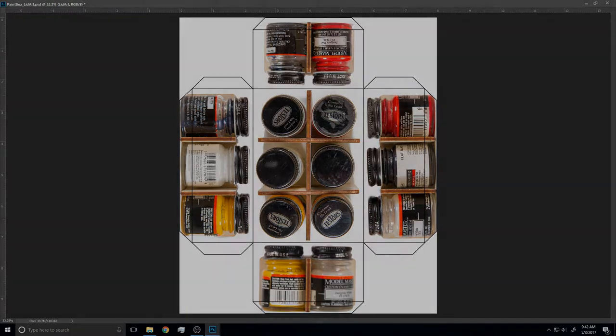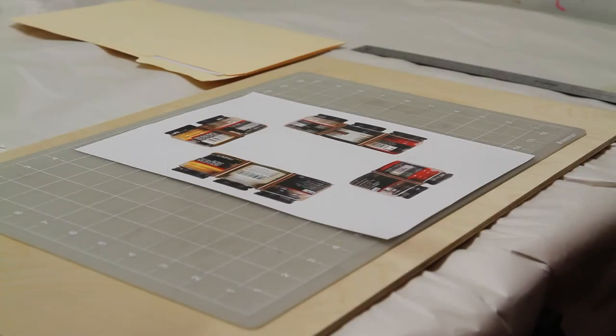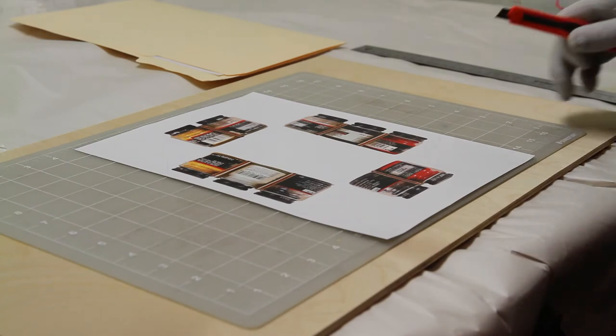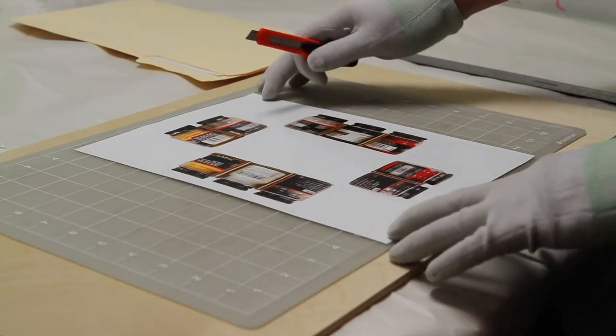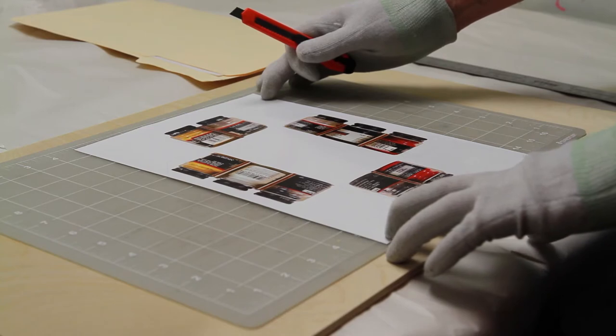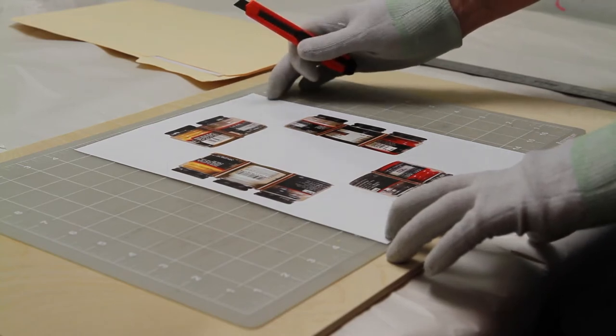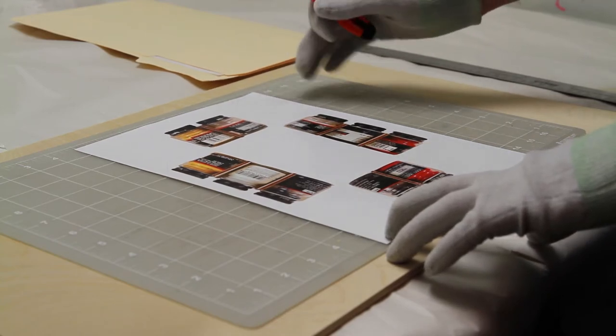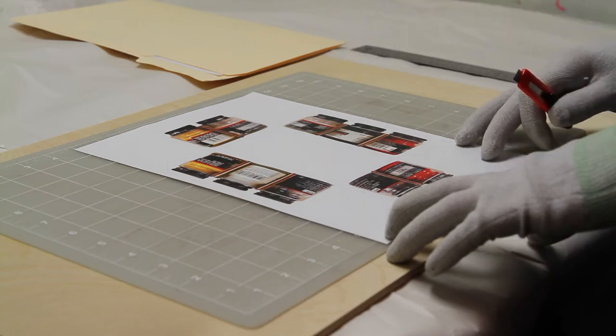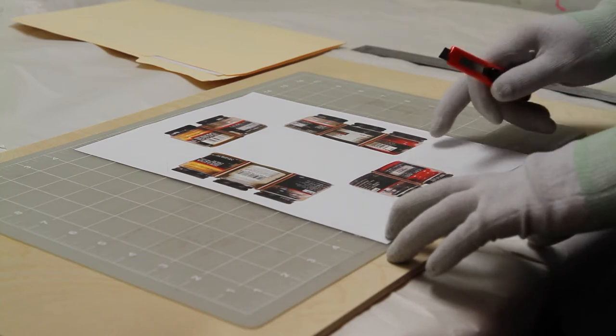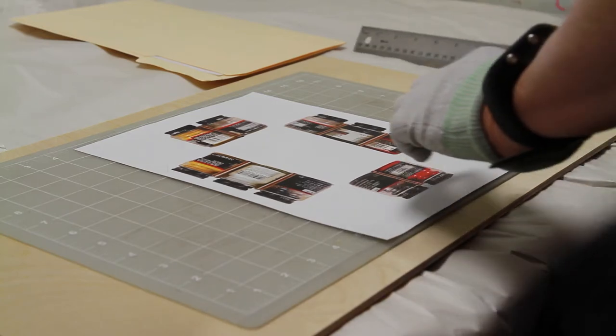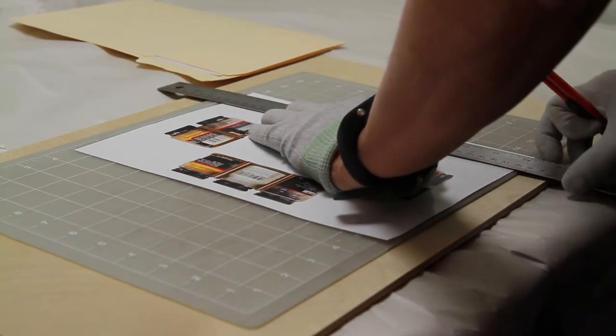In this tutorial we are applying our artwork to the paint box project. After you've laid out your artwork on the template and printed it out, it's time to cut away the excess. You can use the marks on the template itself to help you do that. That way you'll preserve the flaps and get the right cuts in.